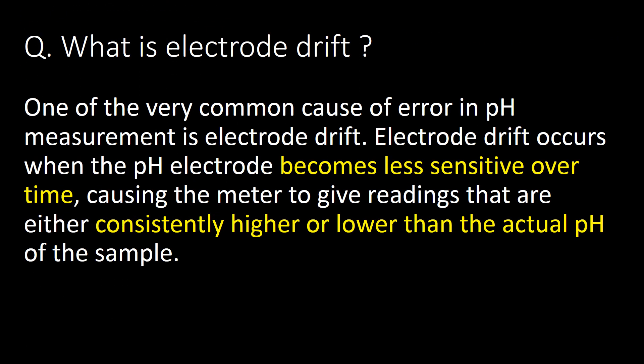What is electrode drift? One of the very common causes of error in pH measurement is electrode drift. Electrode drift occurs when a pH electrode becomes less sensitive over time, causing the meter to give readings that are either consistently higher or lower than the actual pH of the sample.